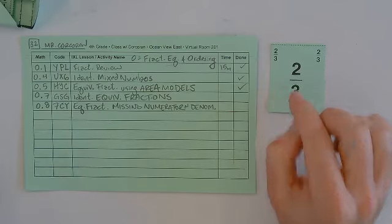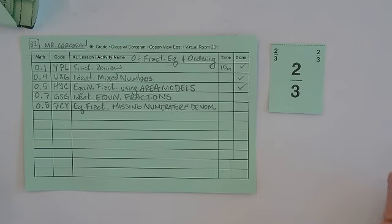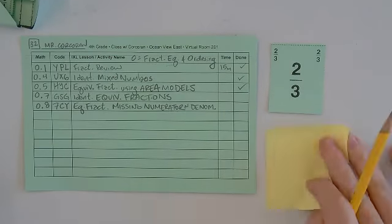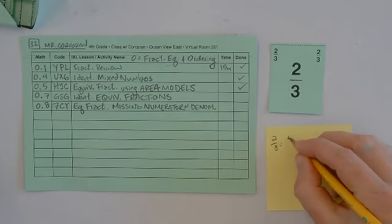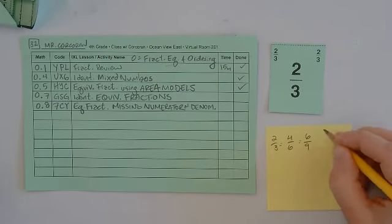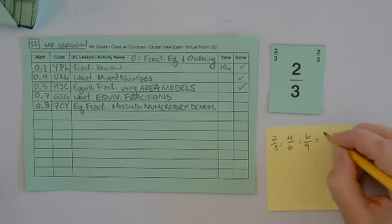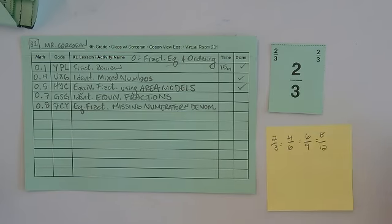Like a simple activity for this, relatively simple, would be two-thirds. Two-thirds is equivalent to what, right? So then you do two-thirds equals four, double, six, triple, six, ninths, quadruple, eight, twelfths, right?